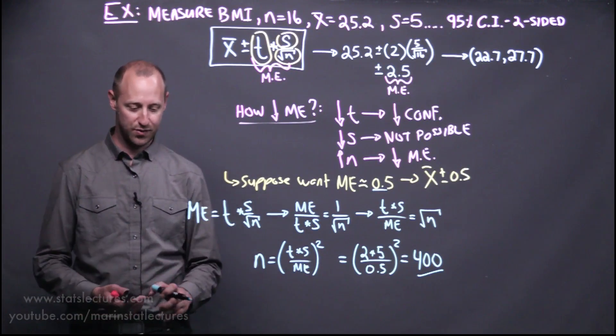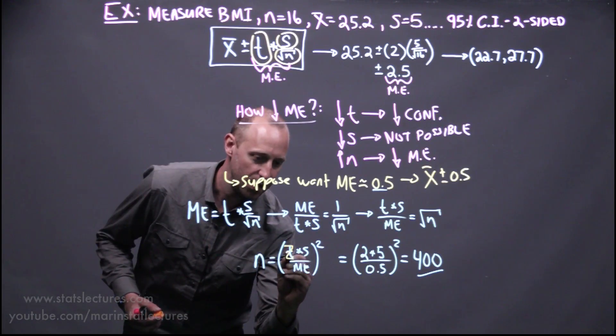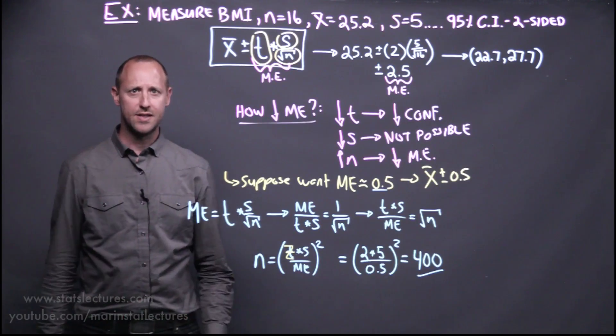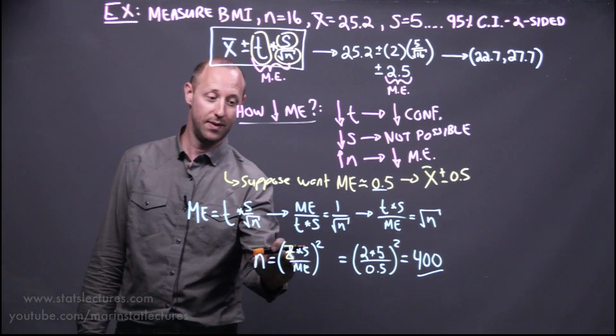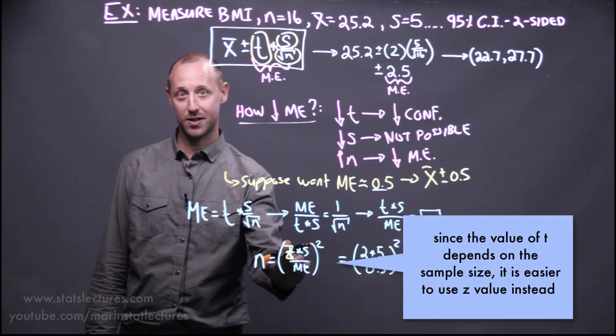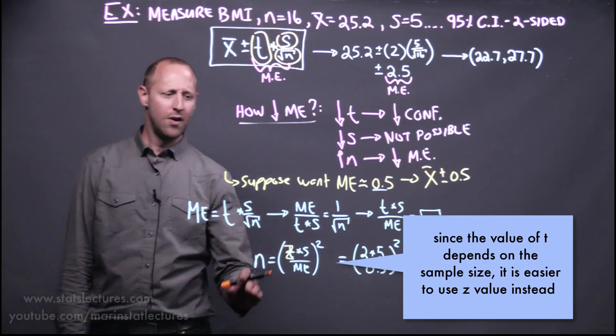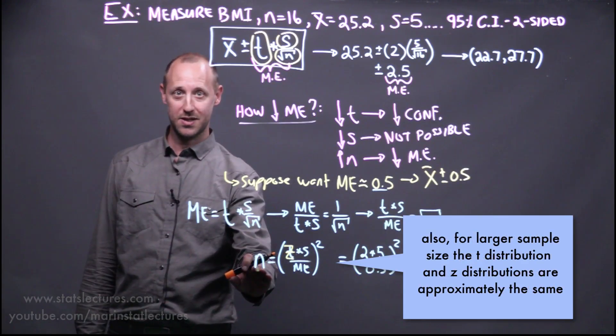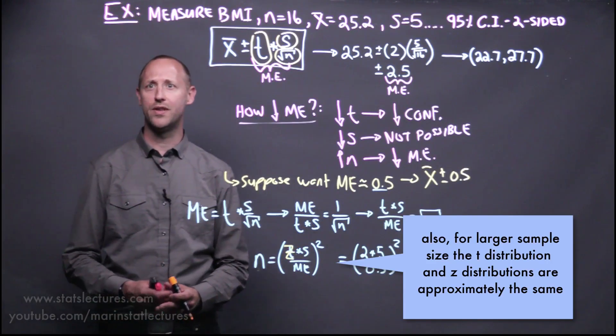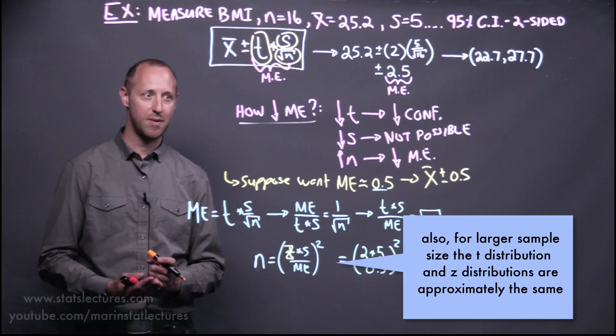A few other notes in this formula. What we end up doing is replacing the t value with z. And again, this is mainly because here we're trying to work out a sample size, and the exact value of t depends on the sample size. So we can get stuck in this back and forth process. Also here, when we're doing a sample size calculation, we're generally looking at larger sample sizes, at which point the t distribution and the z are approximately the same, so it's not going to make a big difference.